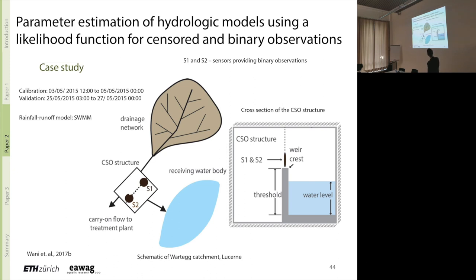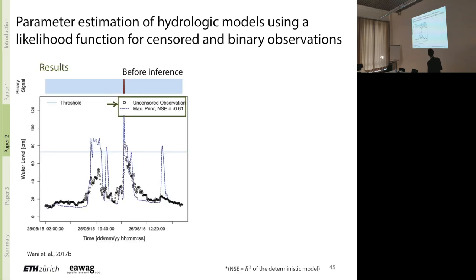We had a short measurement campaign in an urban catchment in Lucerne. What you see here is a schematic of the catchment at the very downstream. We installed these sensors and if you see the cross section of the structure you will have water level. And when the water level in this network increases and goes over the weir crest which we know is the threshold then we get observations. So I will have to explain there are going to be a lot of many lines in the upcoming graphs.